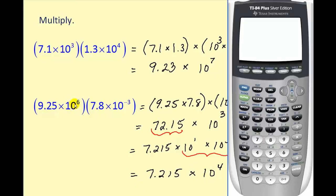To check this on the graphing calculator, open parentheses and type in 9.25. Pressing second comma gives a capital E for scientific notation, then type the exponent. Do the same for the second number: 7.8, second comma, negative 3. Close the parentheses and hit enter. The answer appears in decimal form, but converting it to scientific notation confirms it matches our answer.